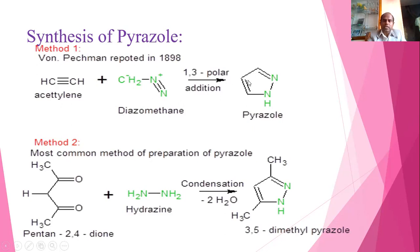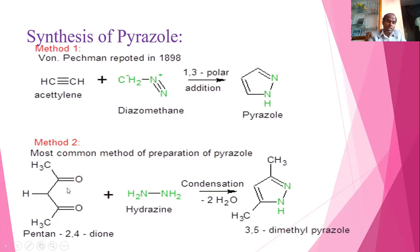A more convenient method for making pyrazole starts with 1,3-dicarbonyl compounds. One example is pentane-2,4-dione, which exists as a keto-enol tautomer. The keto or enol form can react with hydrazine, giving rise to 3,5-disubstituted pyrazole. This is the synthesis of pyrazole.